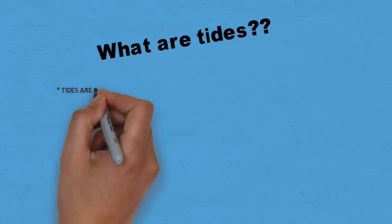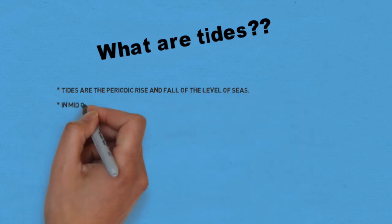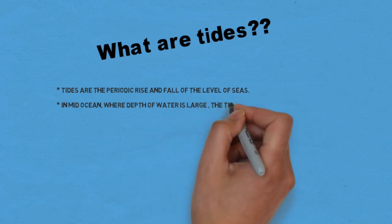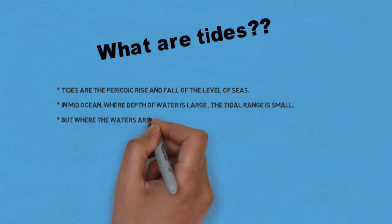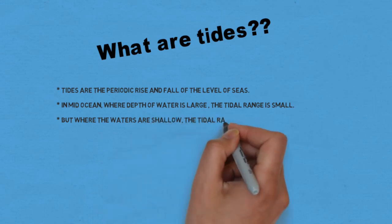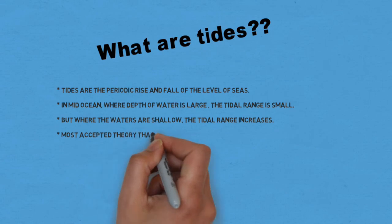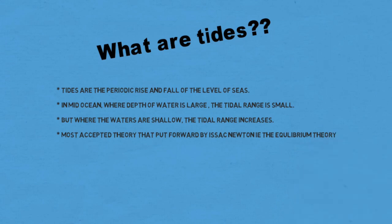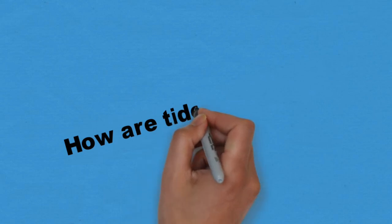Tides are the periodical rise and fall of the level of seas. In mid-oceans where the water is large, the tidal range is small, but where the waters are shallow, the tidal range increases. The most accepted theory was put forward by Sir Isaac Newton — the equilibrium theory — to explain what tides are.